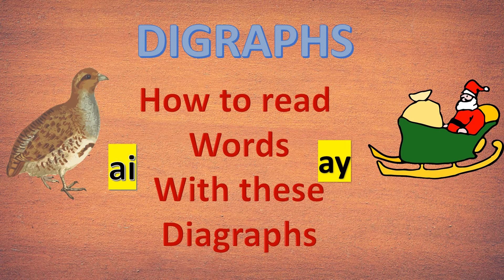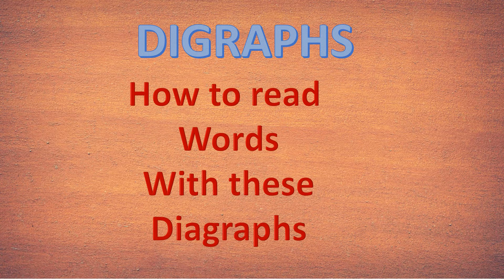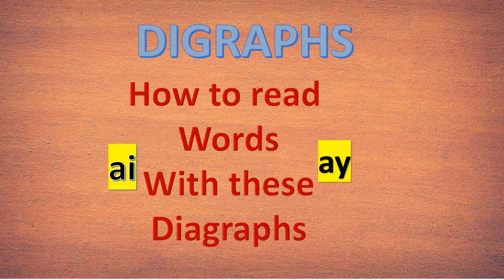Dear children, today we will learn two digraphs. What are digraphs? When two letters make one sound, it is called a digraph. Here you can see what are the two digraphs we are going to learn: A-I and A-Y. Digraph means two letters making one sound, and we will get to know what sound these two letters make.